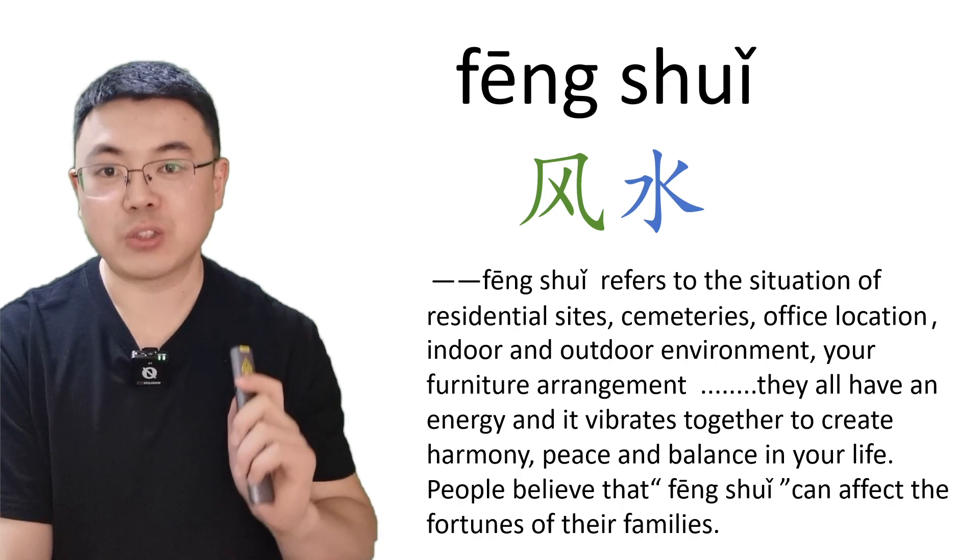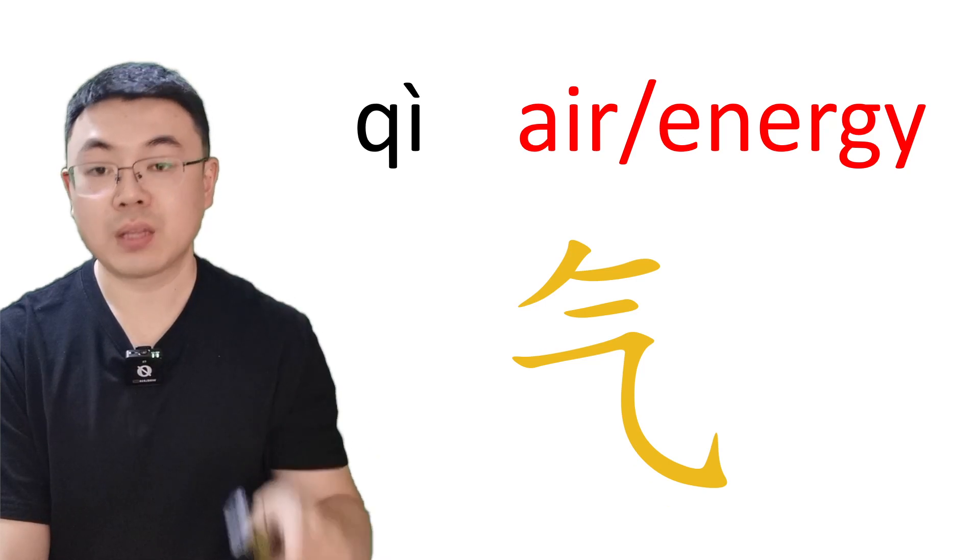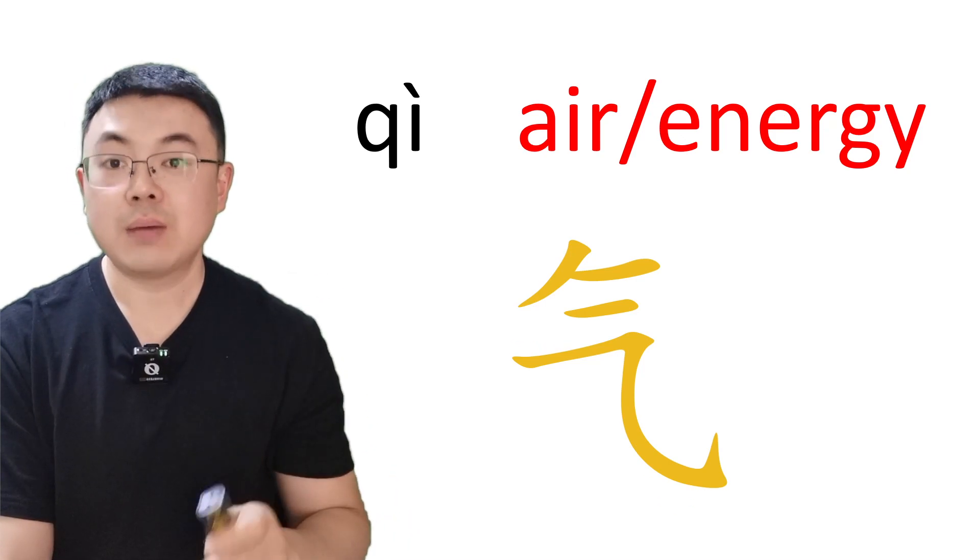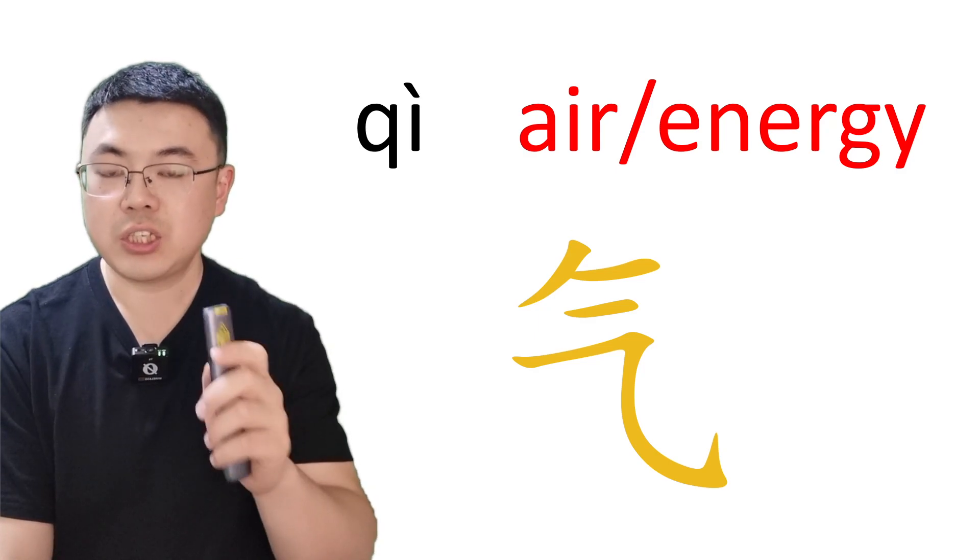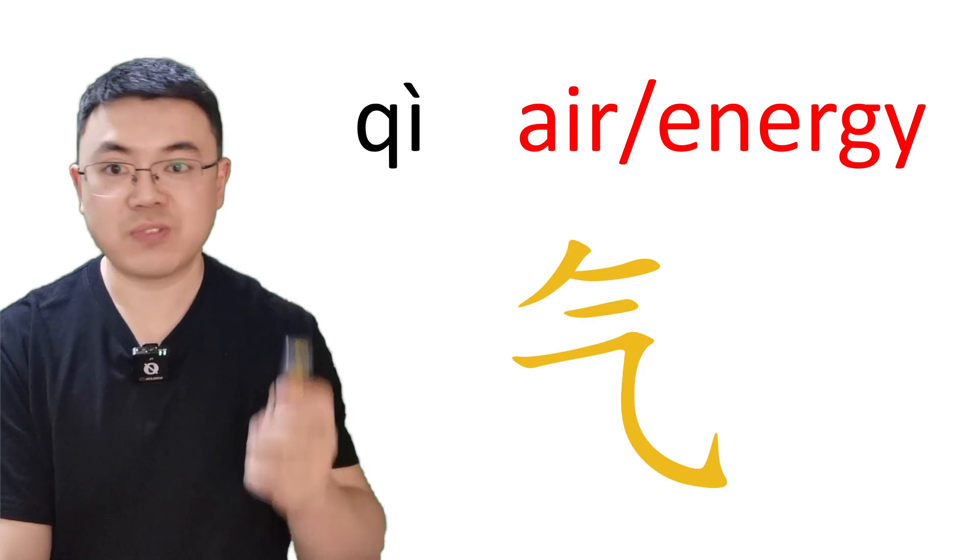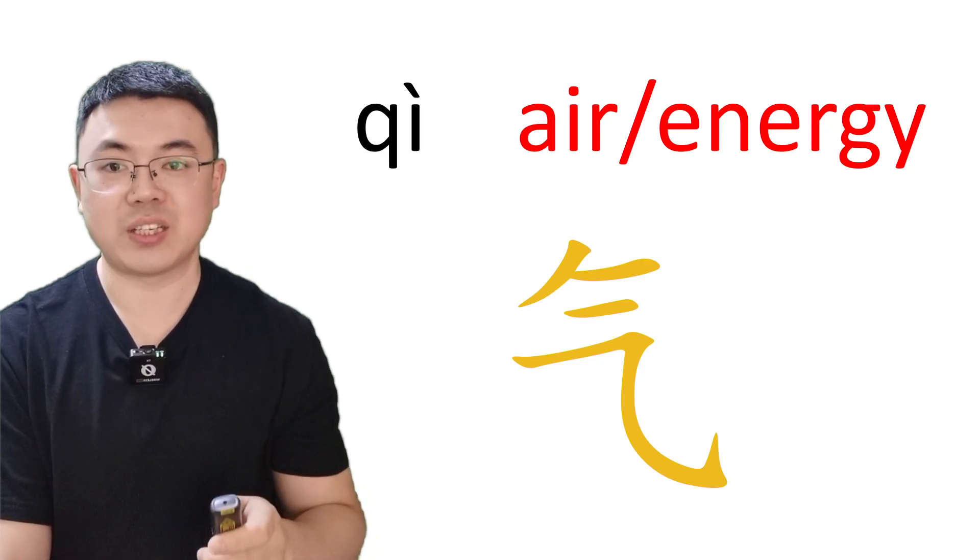Let's move on to the next one. Please read after me. Qi. Qi means air or energy. But in Chinese medicine, qi refers to the power that makes the body organs function.